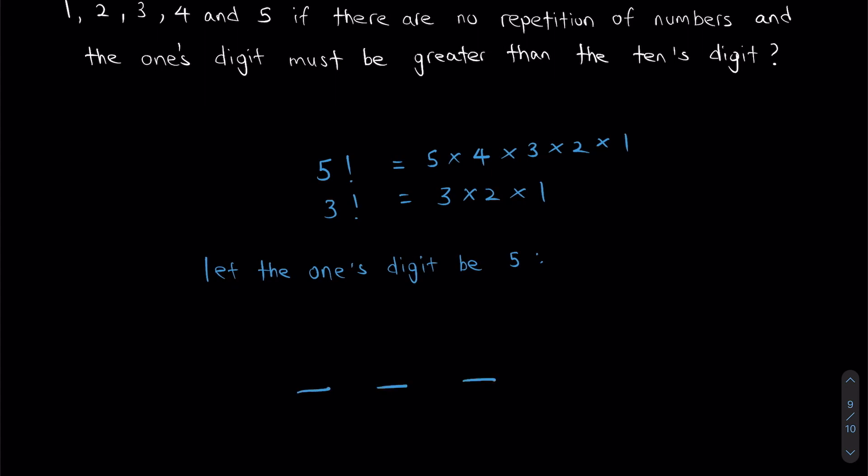So if my ones digit is five, that goes to show that my ones digit will always be greater than my tens digit. Then the question